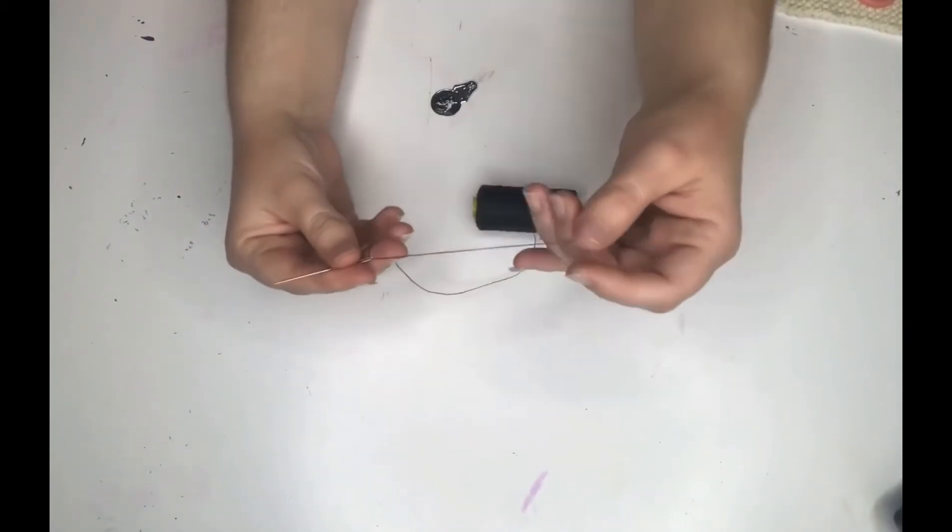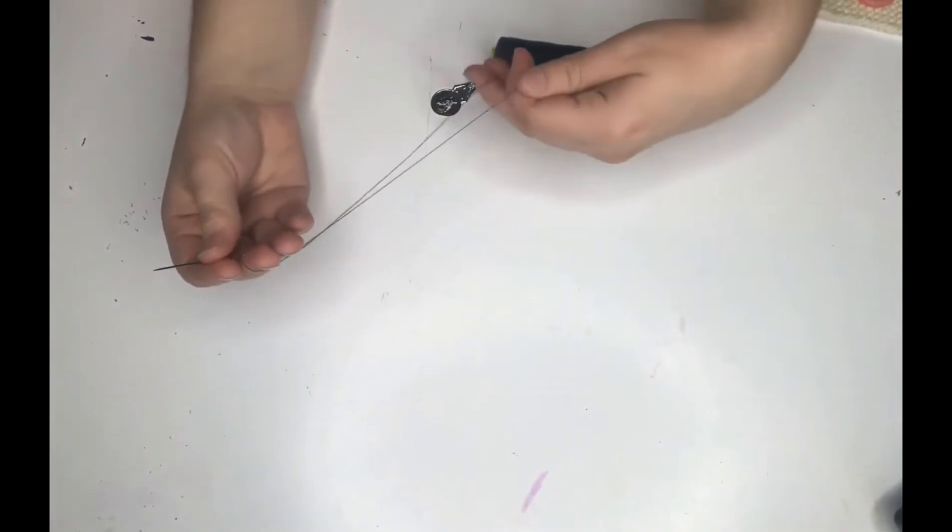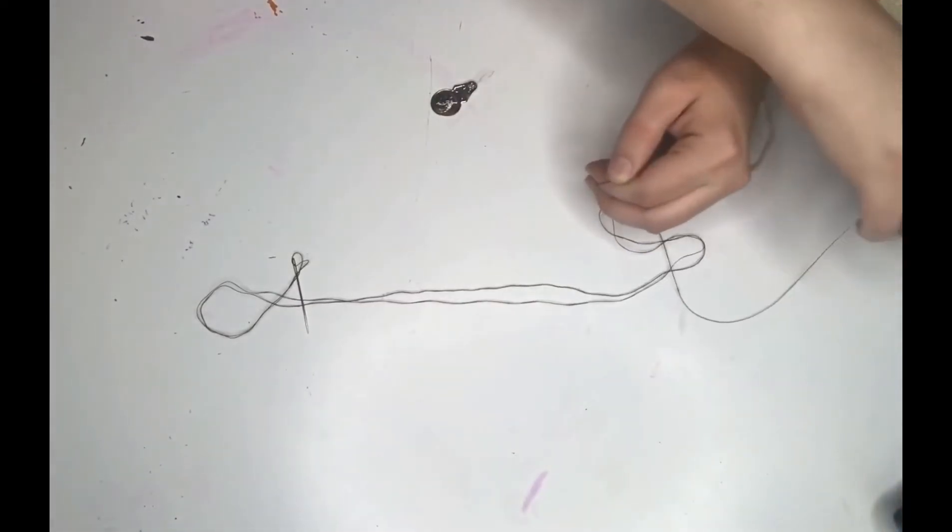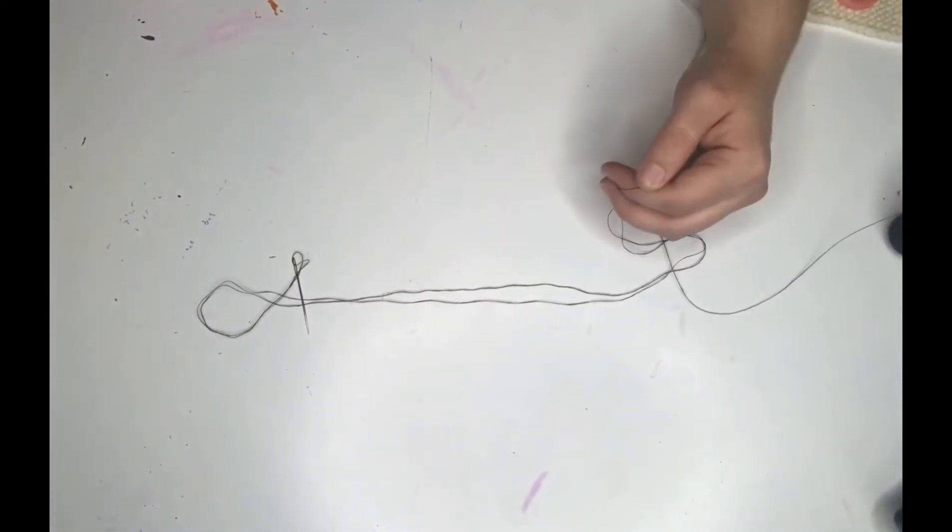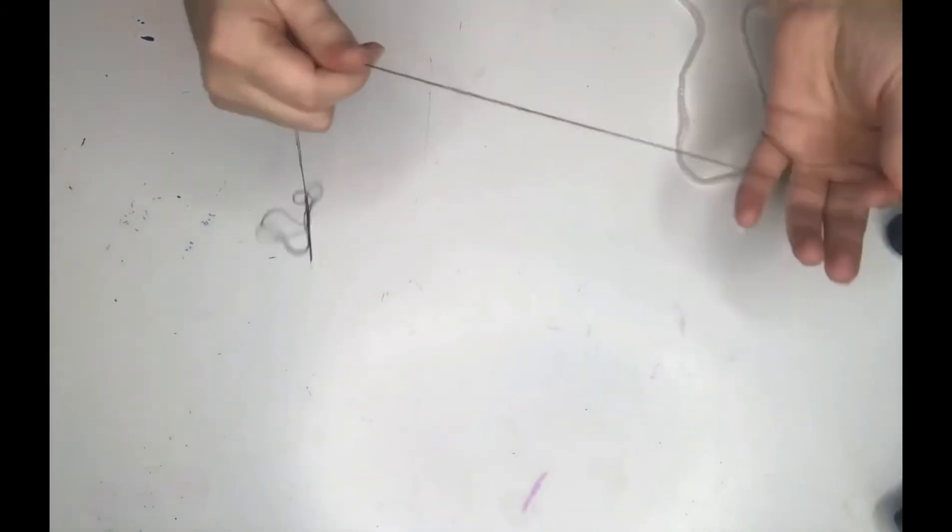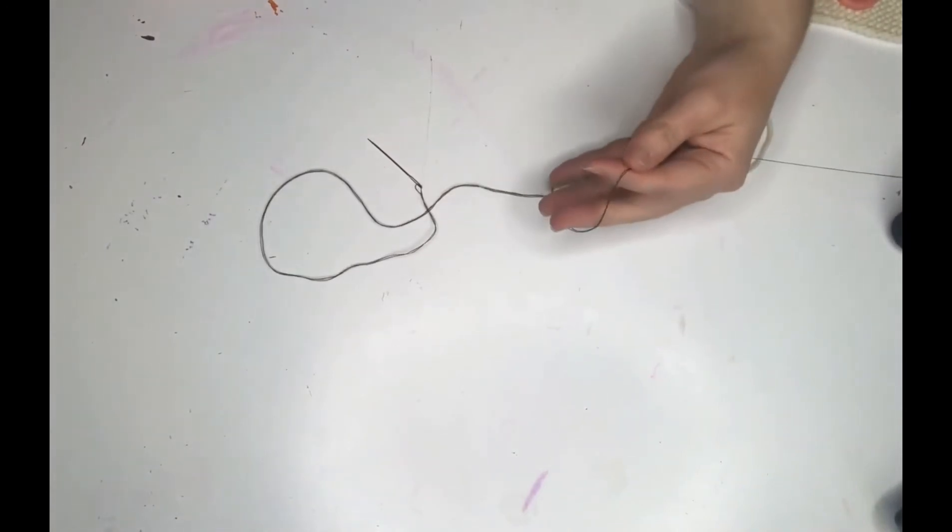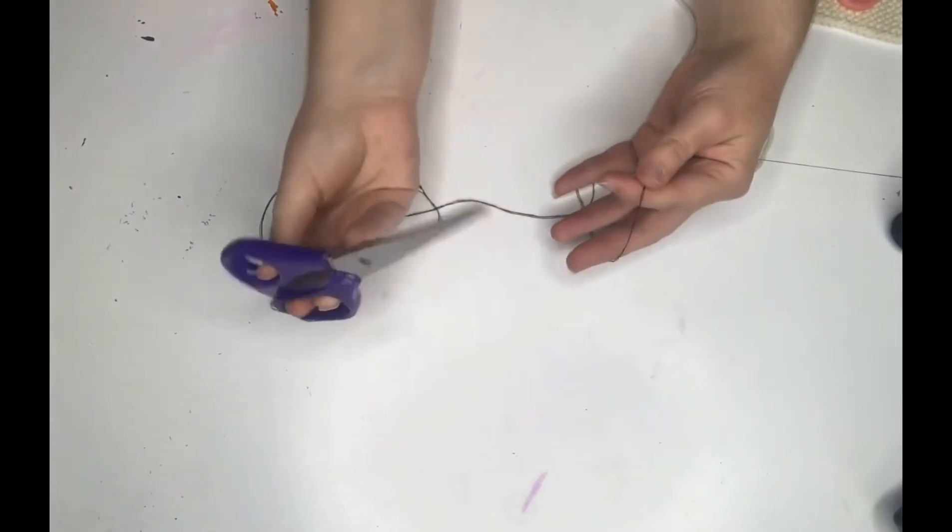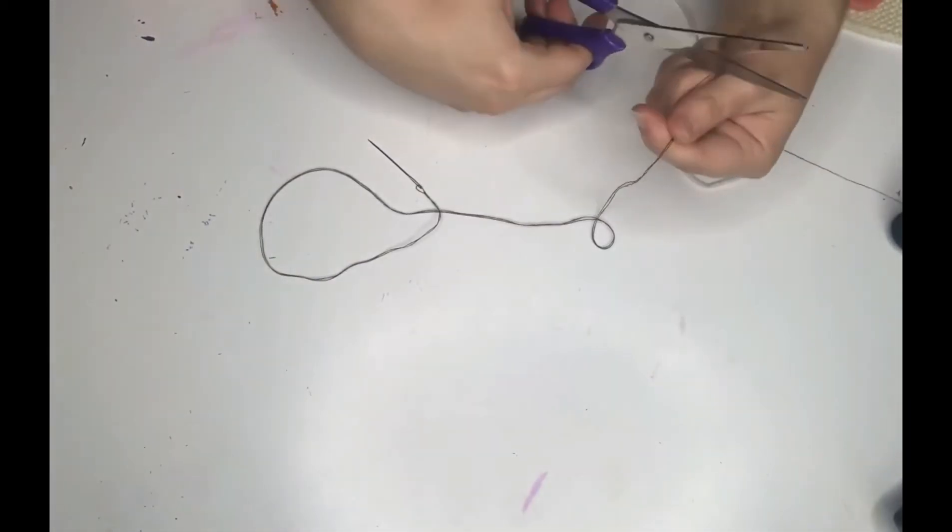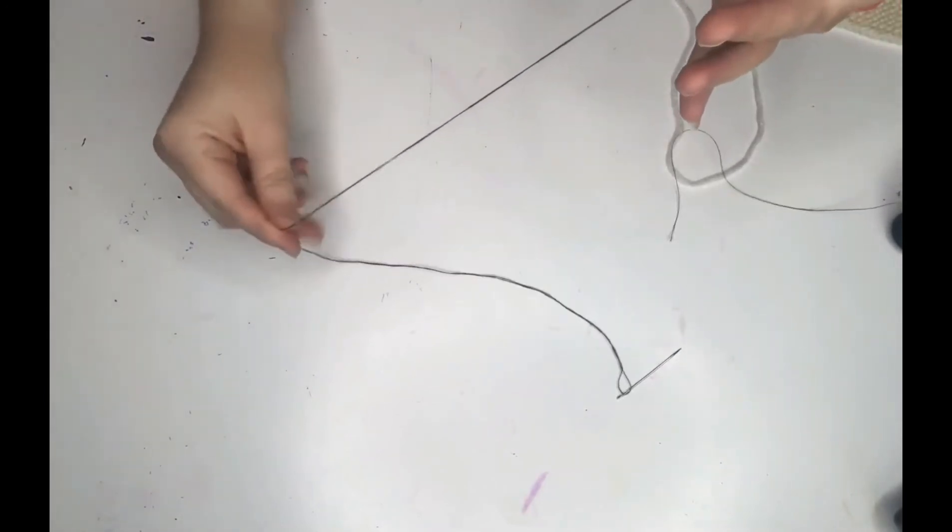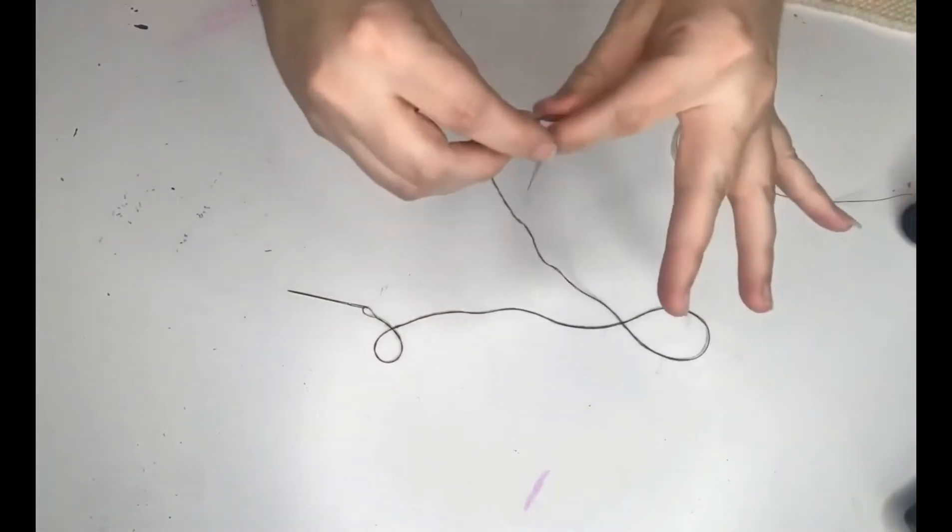The next thing to do is pull out how much thread you think you're going to use. I strongly suggest you overestimate it, particularly when you're first starting. It's always better to have some extra. I'm just going to cut that off now. There are different types of scissors - these are just normal craft scissors. Sewing scissors won't cut the thread very well; they're for materials that are a bit bigger.